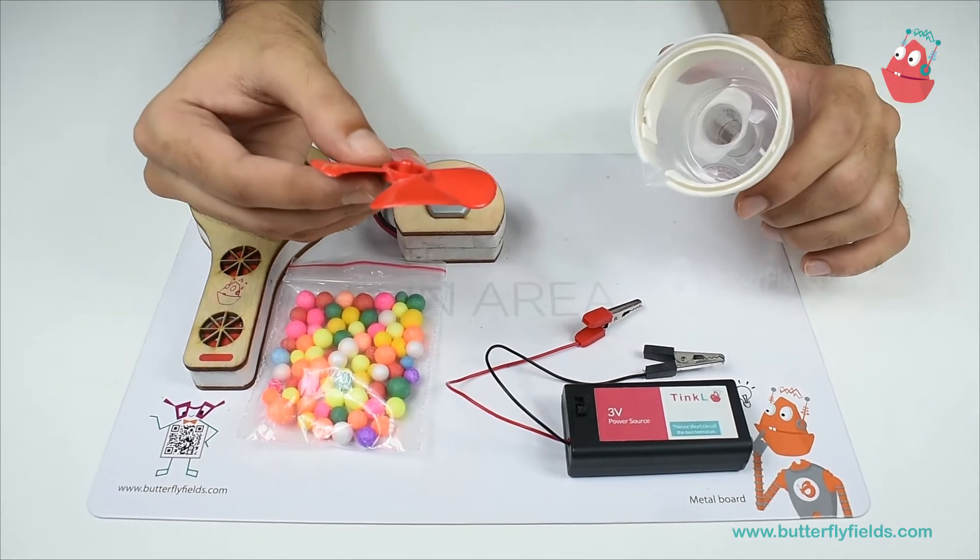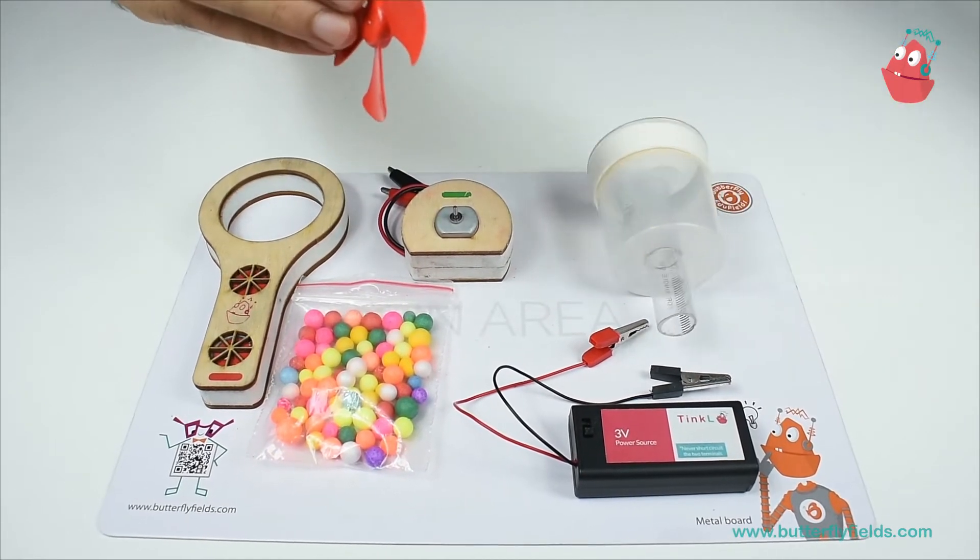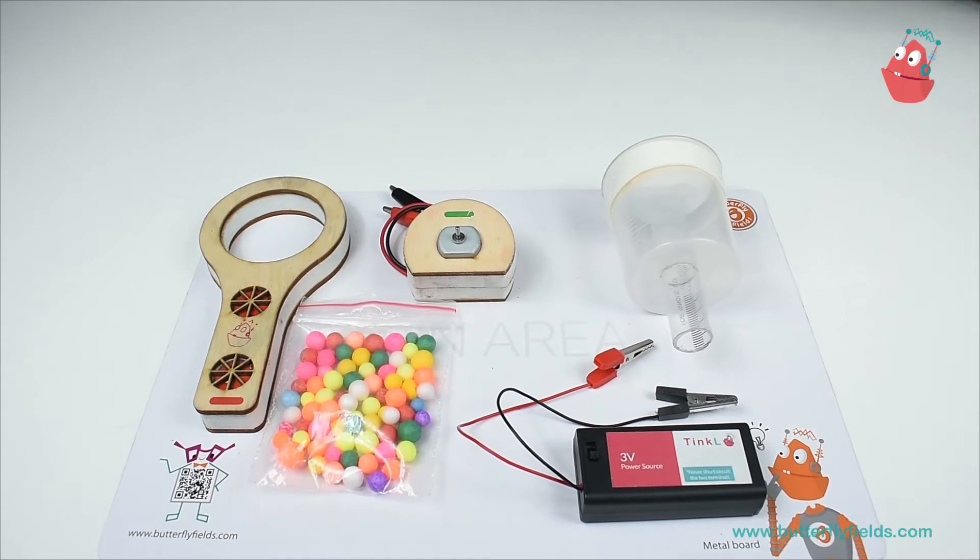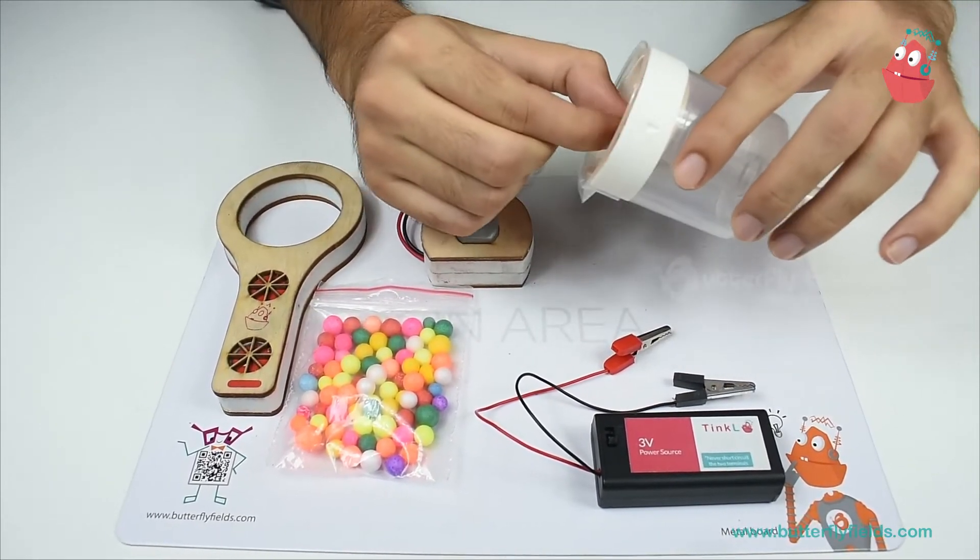Take the fan. See it doesn't fit into it. So we need to cut the fan and make it such that it fits into the beaker.